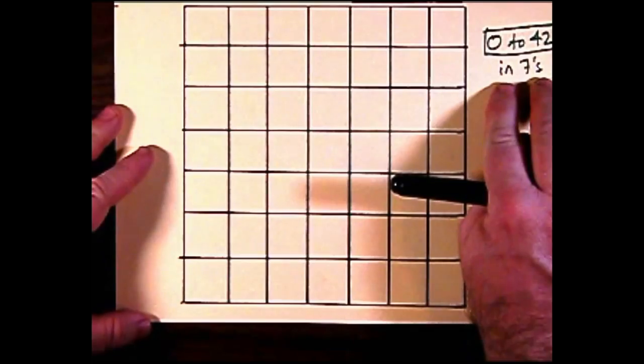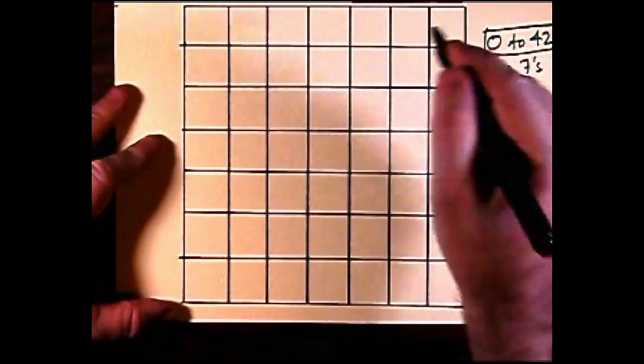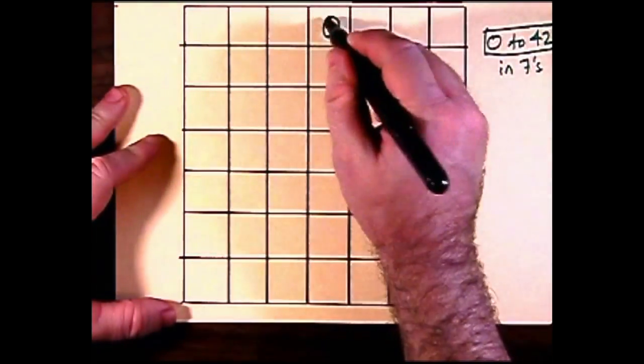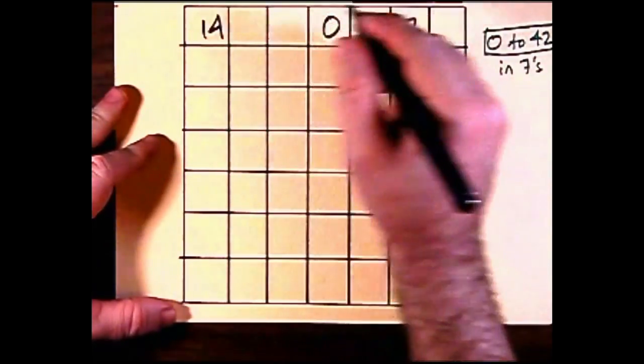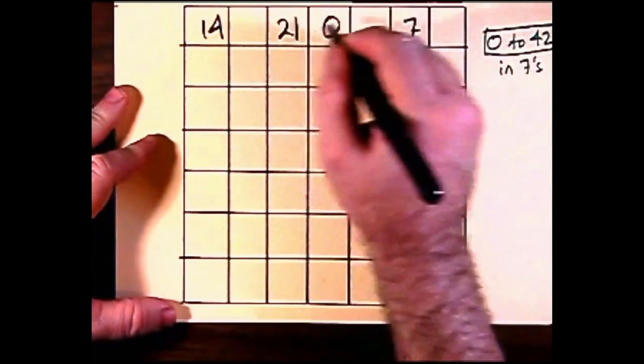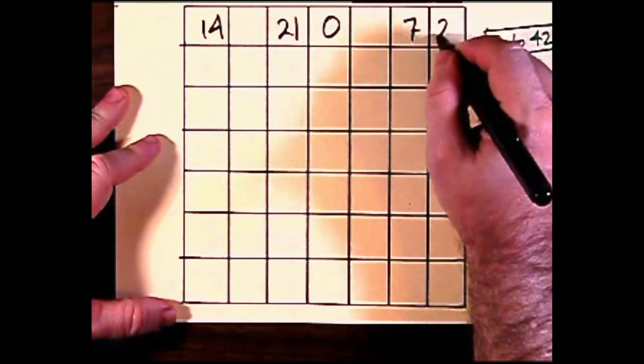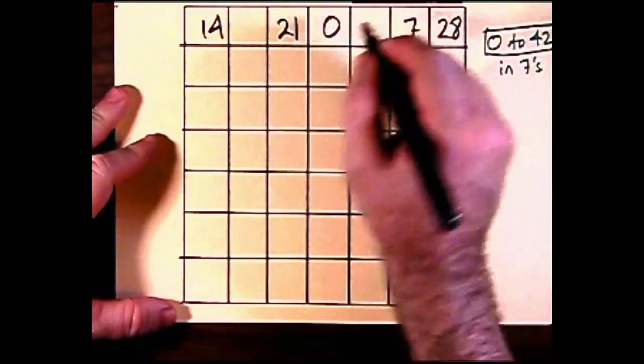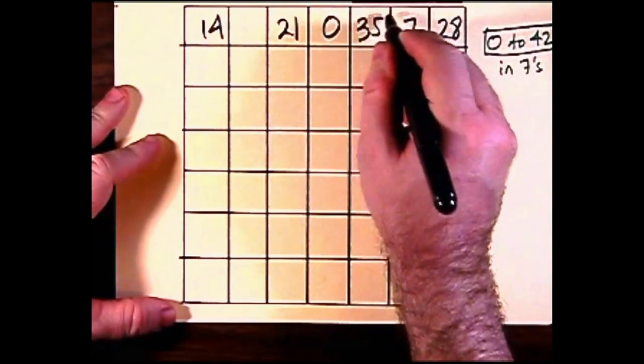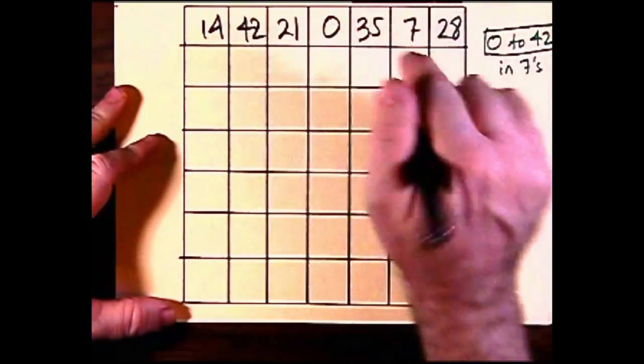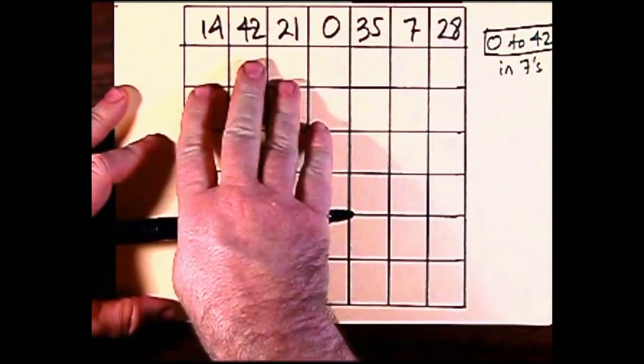This is the numbers 0 to 42 in increments of 7, so 0, 7, 14, 21, and so on up to 42 are the numbers to be laid out in increments of 7. That's 35 and there's 42. Now we take the last three and make them the first three of the next row.